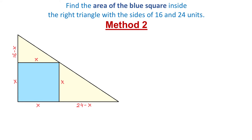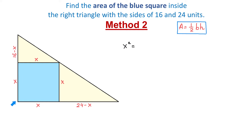With this method, to find the area of the square, we find the area of the large triangle and subtract the areas of the two smaller triangles, using the formula A equals one-half times base times height. The area of the square, which is x squared, equals the area of the large triangle: one-half multiplied by the base 24 and the height 16.